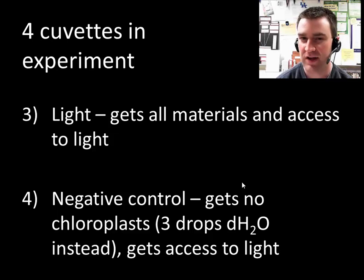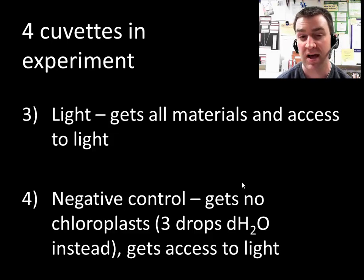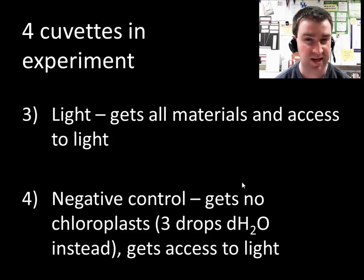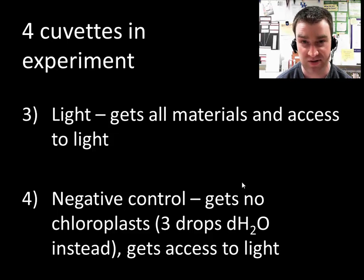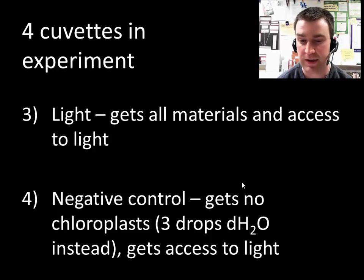Then we're going to have something we call a negative control. In various experiments, you often want to set up a group where you're trying to demonstrate no results or no change. I'm going to have your group discuss in your lab report why we're setting up this particular group and what it demonstrates. It gets DPIP, phosphate buffer, water, and instead of the spinach chloroplasts, we put three drops of water, and still give it access to light. Think about what the purpose of that one is for your future lab report.